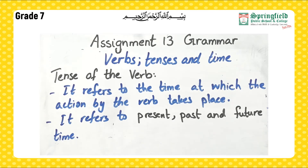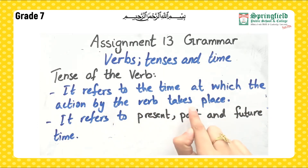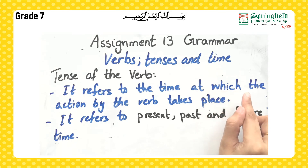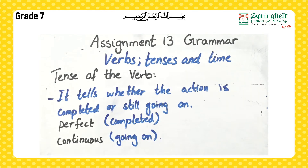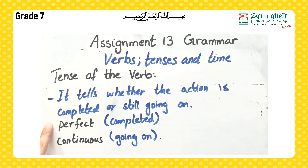Now, the tense of a verb refers to the time at which the action described by the verb takes place. This time can be present, past, or future. Tense also tells us whether the speaker considers the action as completely done or still going on. If the action is completed, we call it a perfect tense. If it is still going on, we call it a continuous tense.